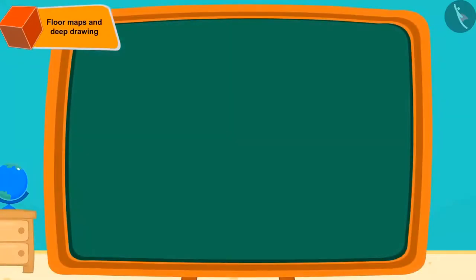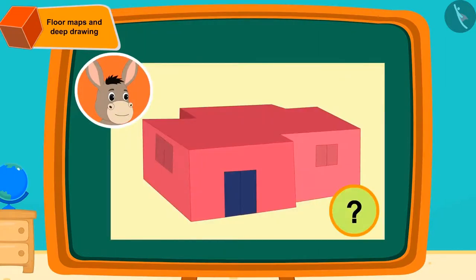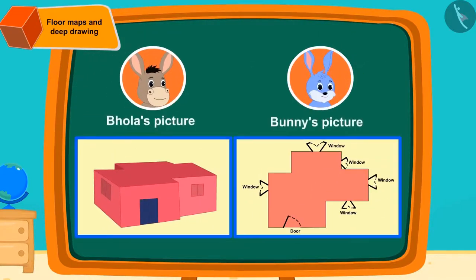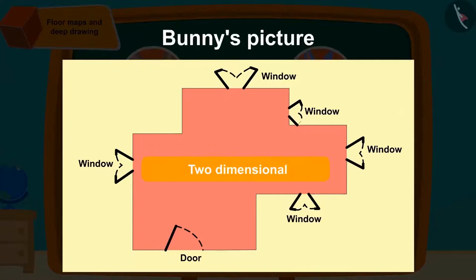Children, have you seen any picture similar to this one created by Bholla? Can you tell the difference between two pictures that Bholla and Banni made? Correct! The floor map that Banni had made is a two-dimensional figure which has only length and the breadth of the room. That's why we cannot tell about the height of the room or the window.